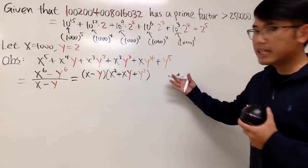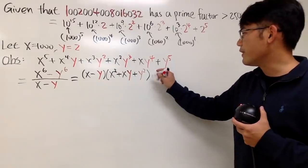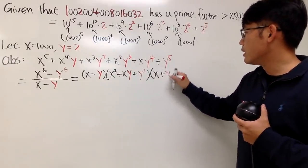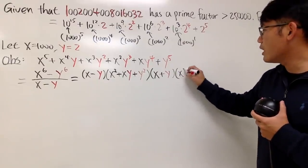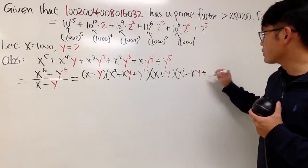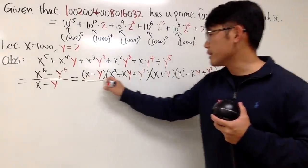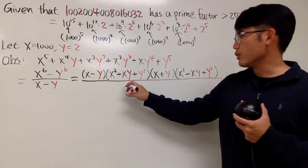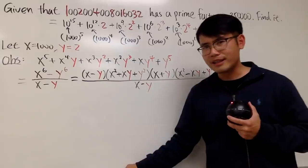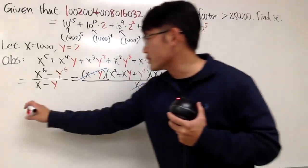And the other part — x cubed plus y cubed — when you factor that, you get x plus y, times x squared minus xy plus y squared. For the denominator, of course, you have x minus y. And using the blue pen — cancel, cancel. We have now factored this expression.